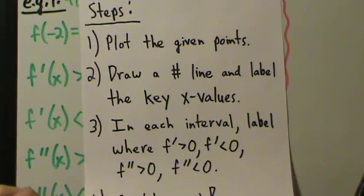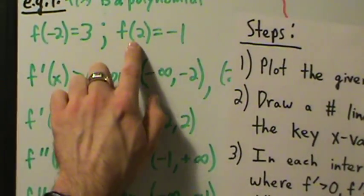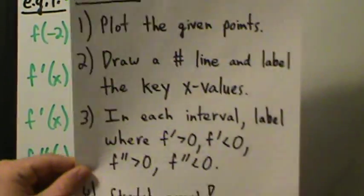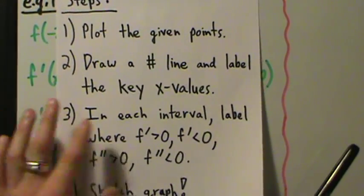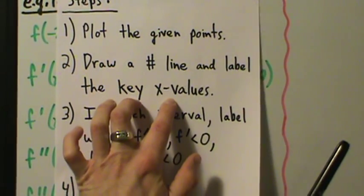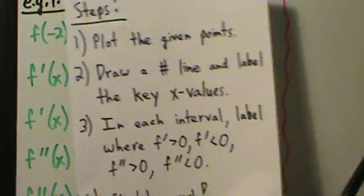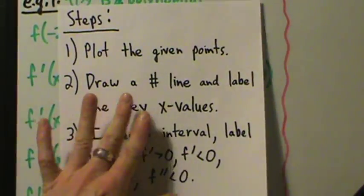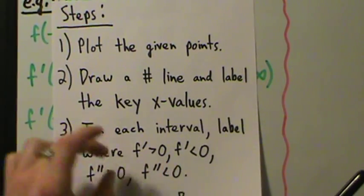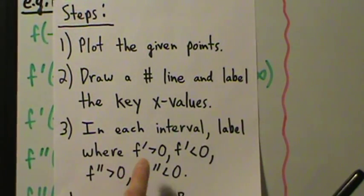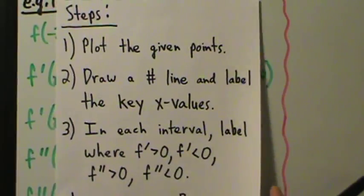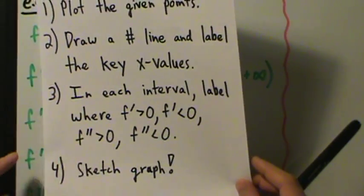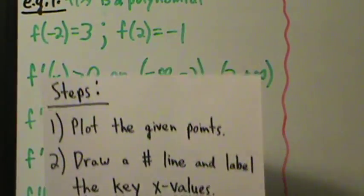Step 1 is to plot the given points. Our given points are f(-2) = 3 and f(2) = -1. Step 2 is to draw a number line and label the key x values — meaning any x value mentioned in the problem. Step 3 is to label, in each interval on the number line, where f' is positive and negative, and where f'' is positive and negative. Step 4 is to use those intervals to sketch the graph.